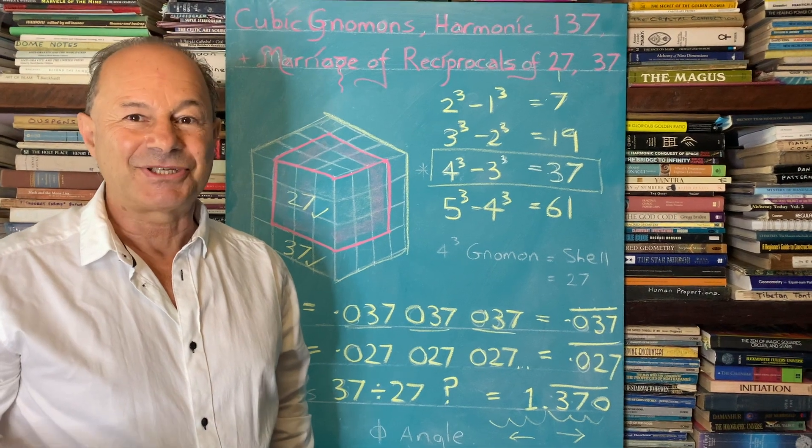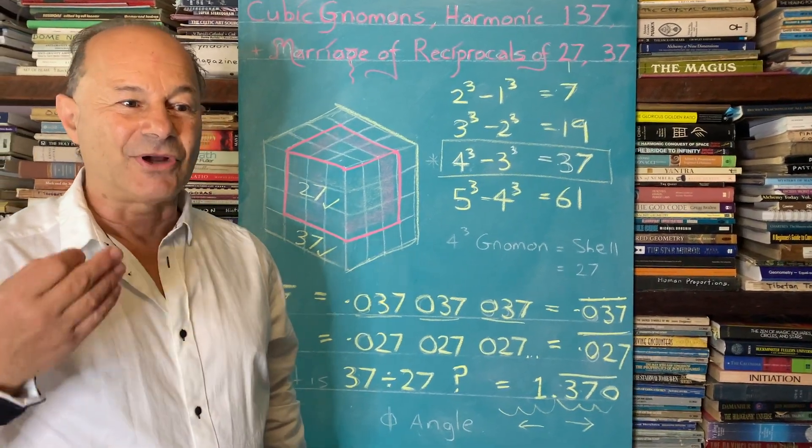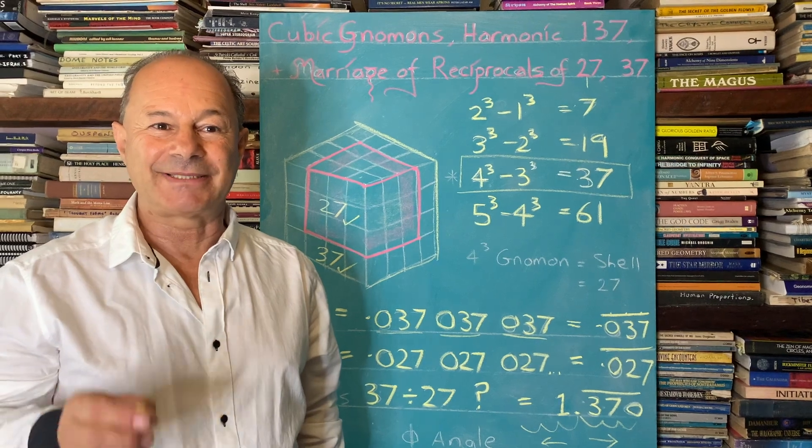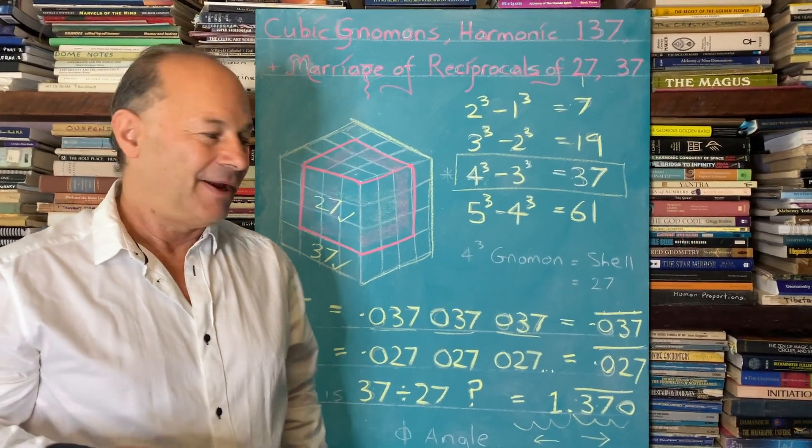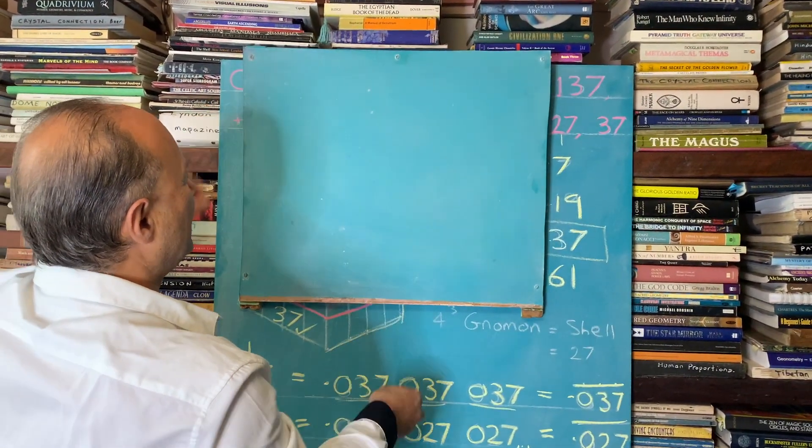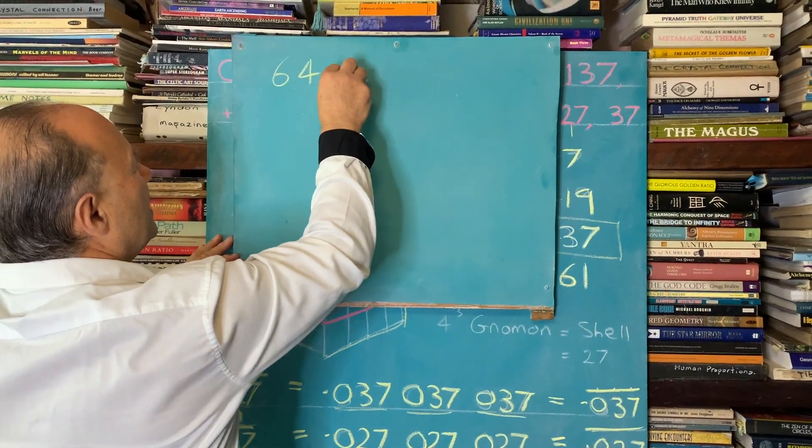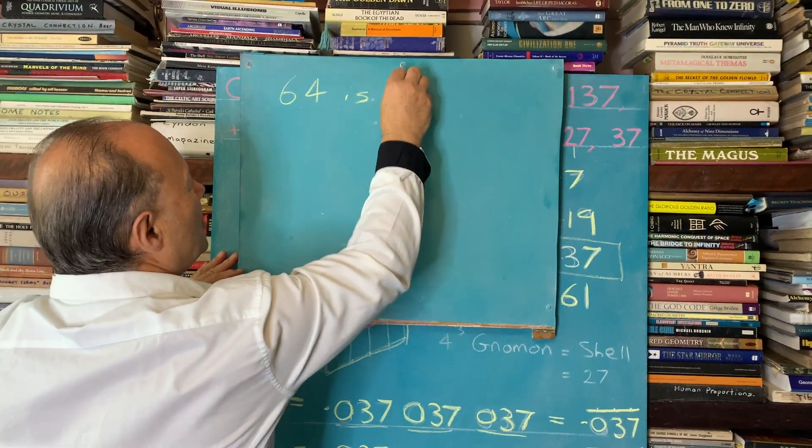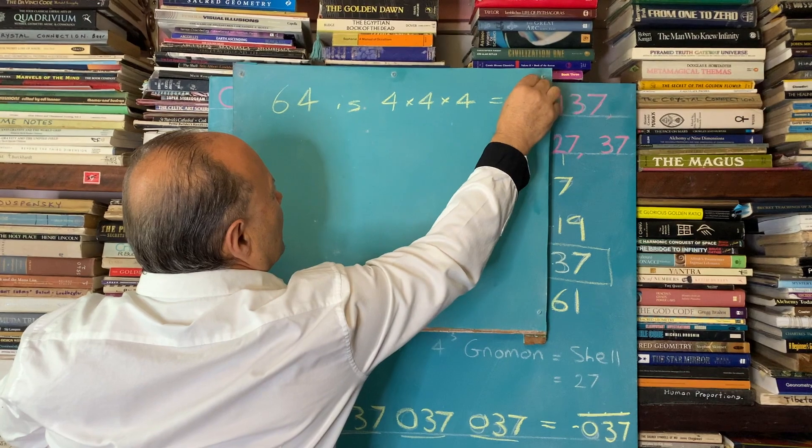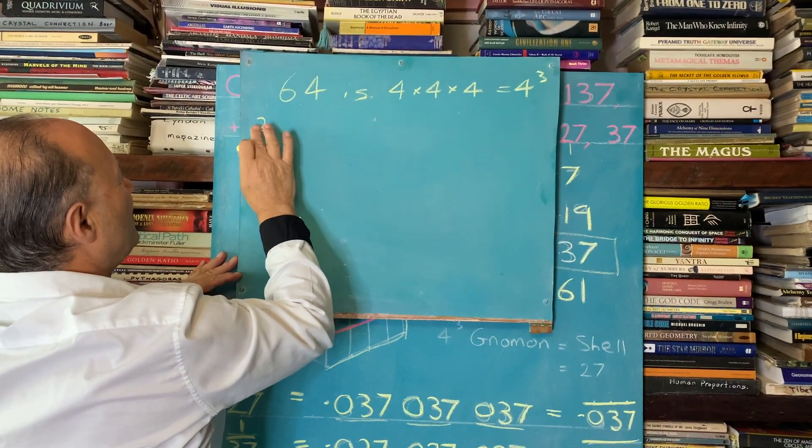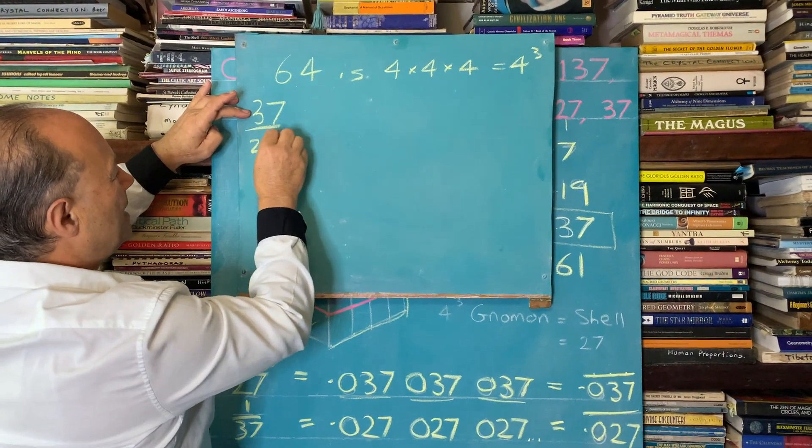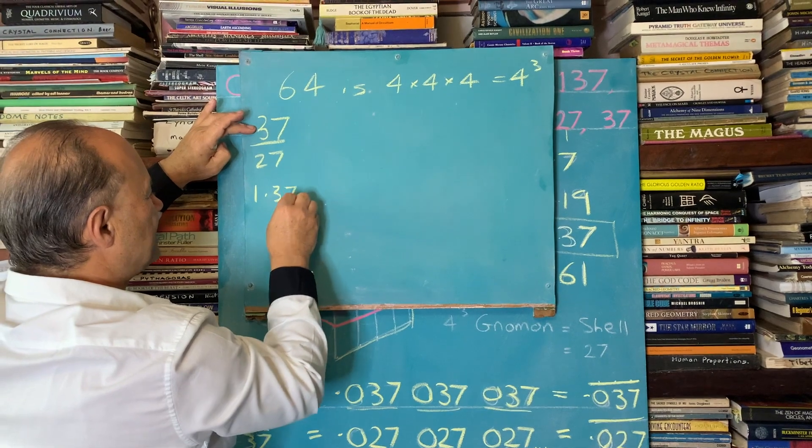So this is an amazing relationship. We have the number 64, which has got to do with DNA. We know it's four cubed, but we didn't know that 64 was based on the sum of 27 and 37. And I'll just show you a little bit more about this relationship. We realized that 64 is, we know it's four times four times four, which is four cubed. We know that, but it was composed of 37 on the shell and we divided it by 27 and we got 1.370 repeater.